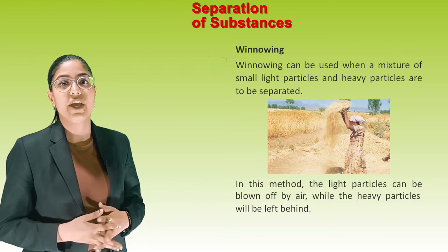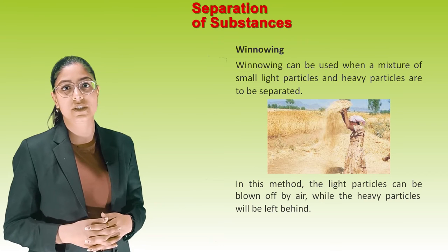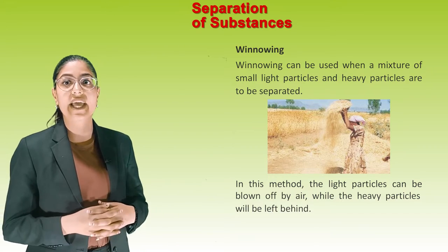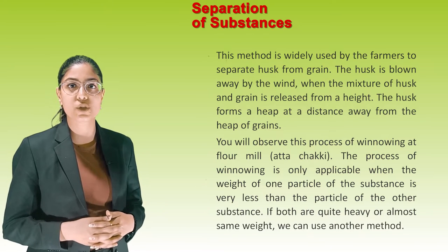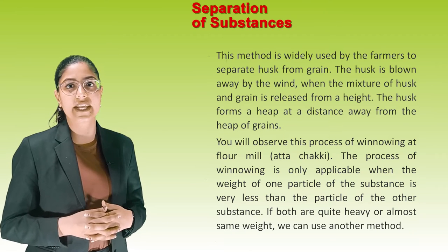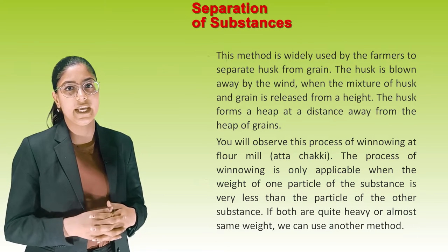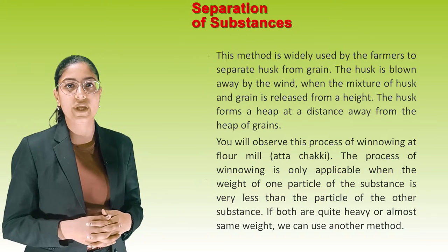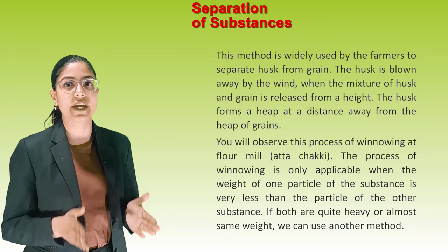Winnowing: Winnowing can be used when a mixture of small light particles and heavy particles are to be separated. In this method, the light particles are blown off by air while the heavy particles are left behind. This method is widely used by farmers to separate husk from grain. When the mixture of husk and grain is released from a height, the husk forms a heap at a distance away from the heap of grain. The process of winnowing is only applicable when the weight of one particle is very much less than the other.